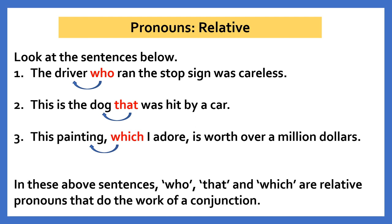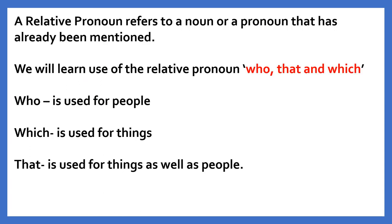Relative pronouns do the work of a conjunction — that means they help in joining the sentence. A relative pronoun refers to a noun or a pronoun that has already been mentioned; that's why it relates back. The relative pronoun 'who' is used for people, 'which' is used for things, and 'that' is used for things as well as people.